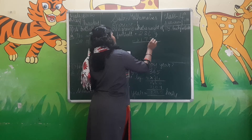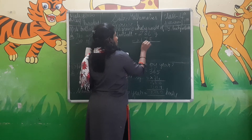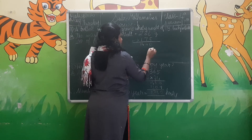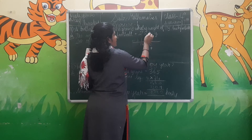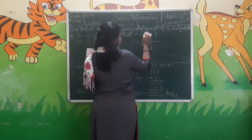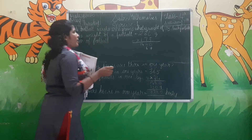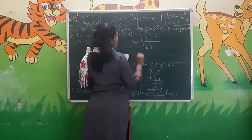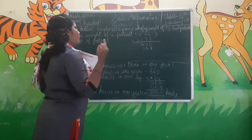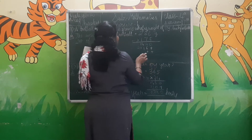First we start multiplying with 5. 5×8 is 40, 4 carry 0 here. 5×8 is 40, 40 plus 4 is 44. 5×2 is 10, 10 plus 4 is 14. Then 7×8 is 56, 5 carry 6 here. 7×8 is 56, 56 plus 5 is 61, 6 carry 1 here. 2×7 is 14, 14 plus 6 is 20. For the 3-digit number, again 2 places we have to write here.